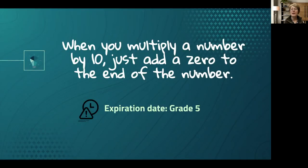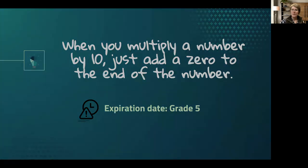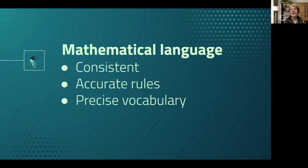So this rule of just adding a zero to a number when you multiply it by 10 will expire in fifth grade when we encounter decimals. So in the future, as you're having conversations with students and in your teaching, think about the language you're using. Make sure it's consistent and accurate and that the rules and the language that you're using are not going to expire and that we use precise vocabulary.